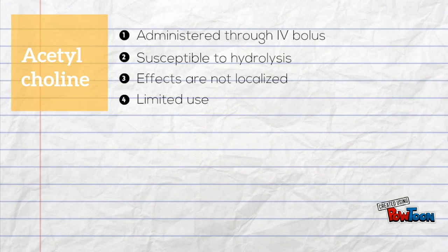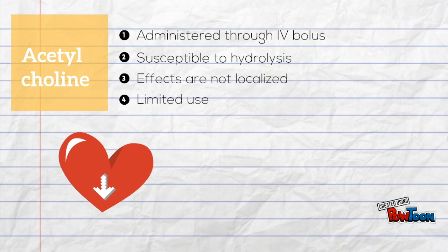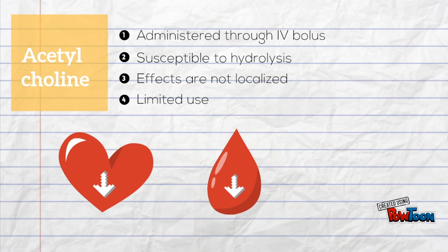First, we'll discuss choline esters. Choline esters are administered through intravenous bolus. The general effects are usually the lowering of heart rate, lowering of blood pressure, and they also increase the activity in the GI tract.